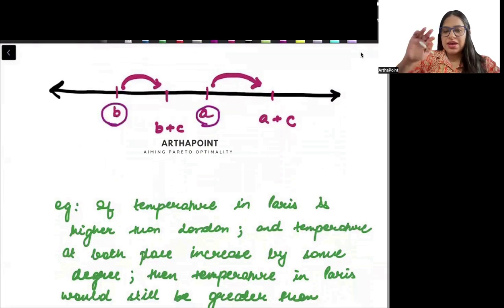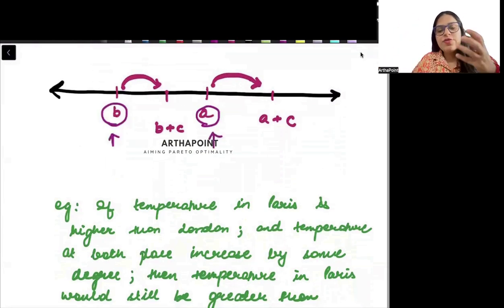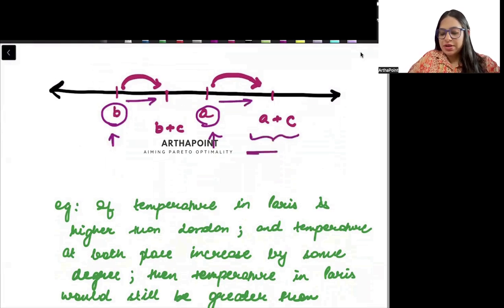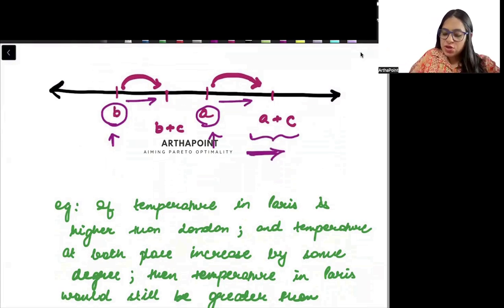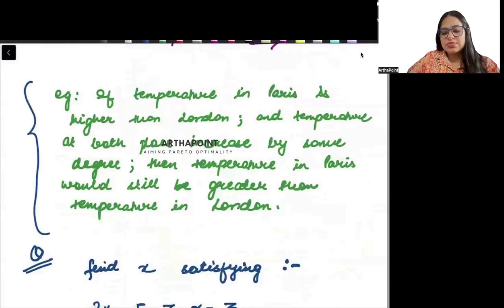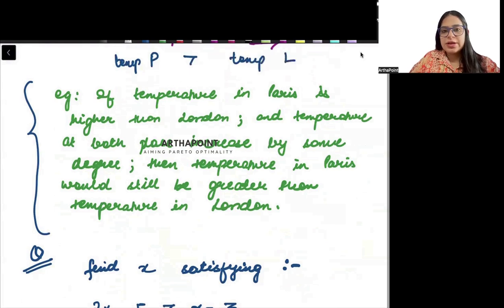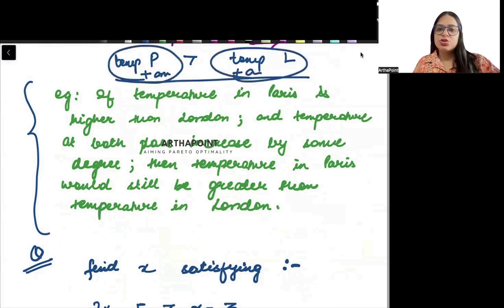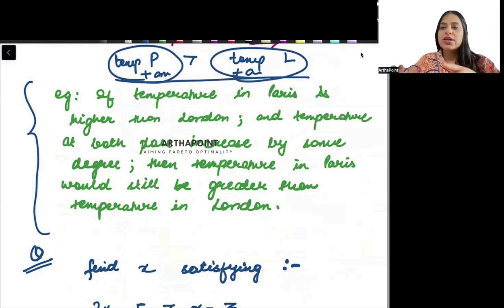We can show this on the number line. Here a is greater than b, a is to the right of b. If I add c to both, a plus c will also be to the right on the number line, so a plus c will be greater than b plus c. A real-world example: if the temperature in Paris is more than the temperature in London, and we add the same amount of temperature to both places, then Paris temperature will still be more than London temperature.